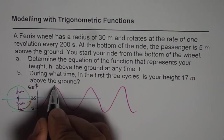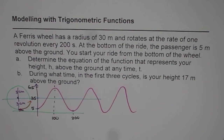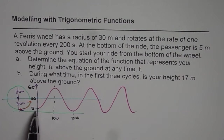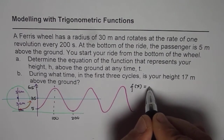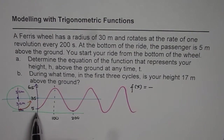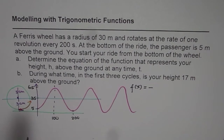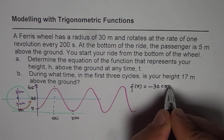We need to write a trigonometric function representing this situation. Since it starts from the bottom, we can write this function as f(x) equals minus cosine, because the cosine function normally starts from the top. So we write negative cosine. Its amplitude is 30, so minus 30 times cosine of...